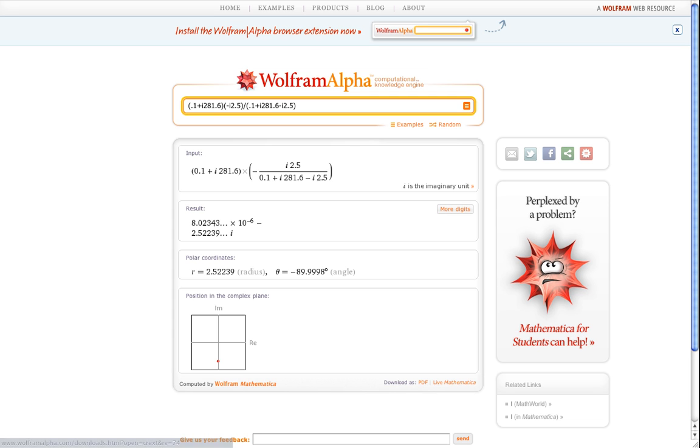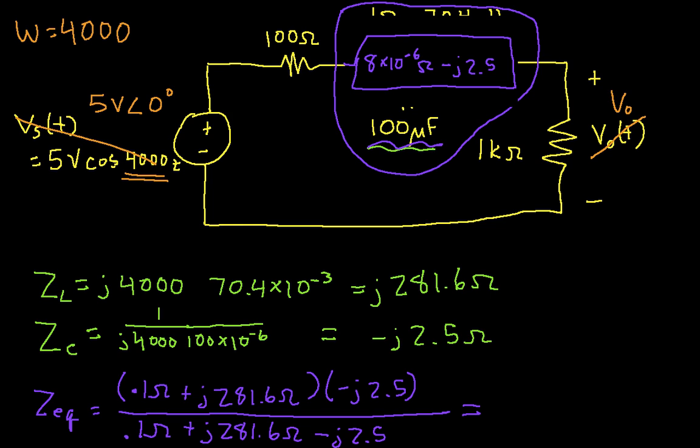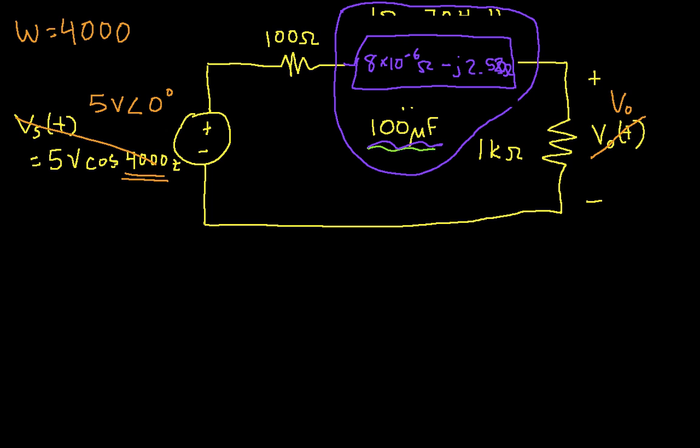Okay, so I can go back to my circuit and I can replace this network by a box that has 8 times 10 to the minus 6 ohms minus j 2.52 ohms. Okay, now I can just go ahead and get V out using a voltage divider, as we did in the previous video.